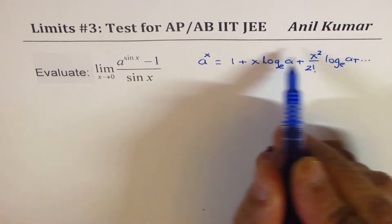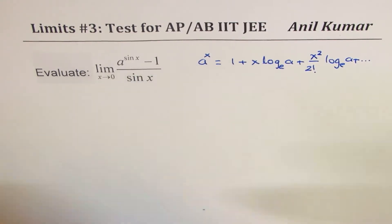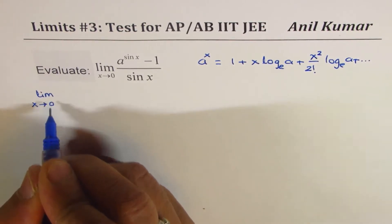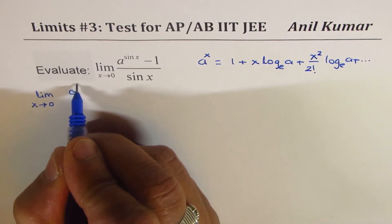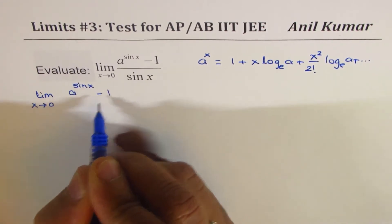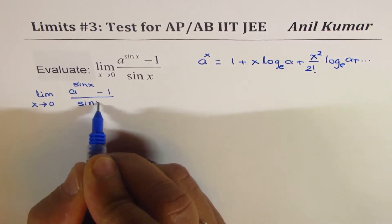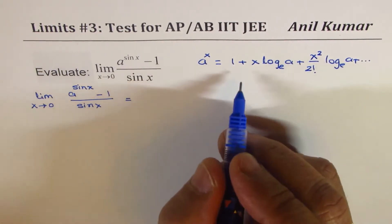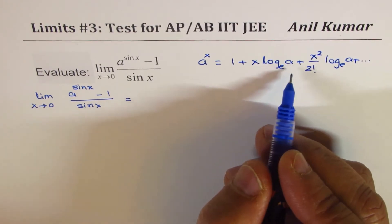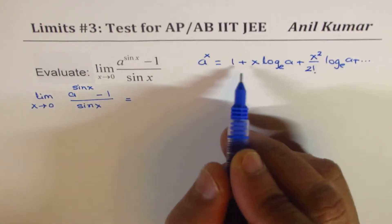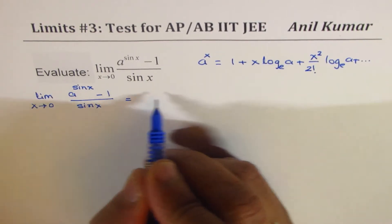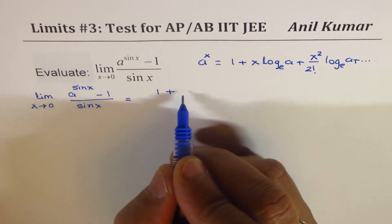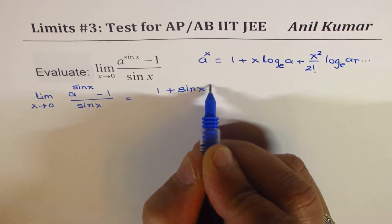The question is limit x approaches 0 for a to the power of sin x minus 1, over sin x. We write a to the power of sin x by replacing the exponent x with sin x in the expansion. So what we get is 1 plus sin x times ln a, and so on.